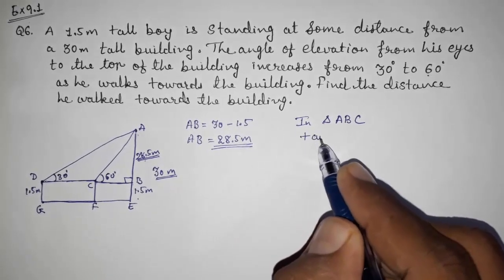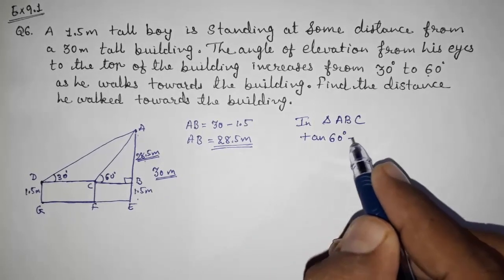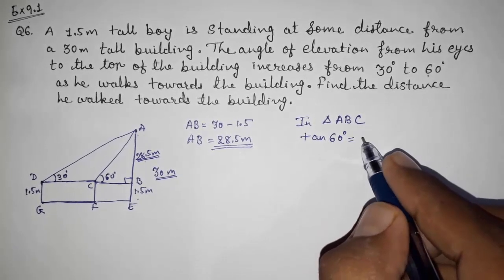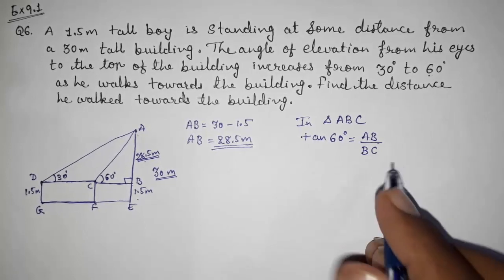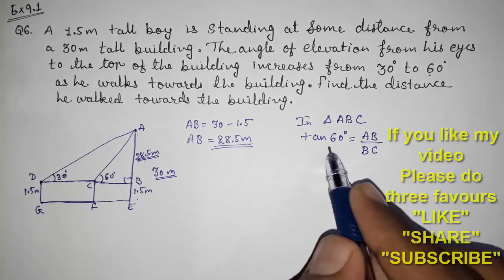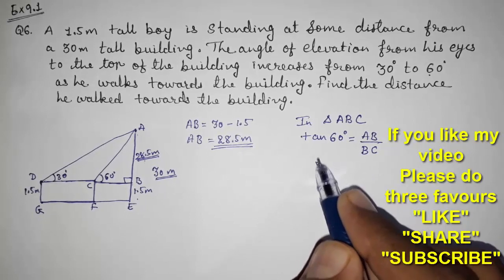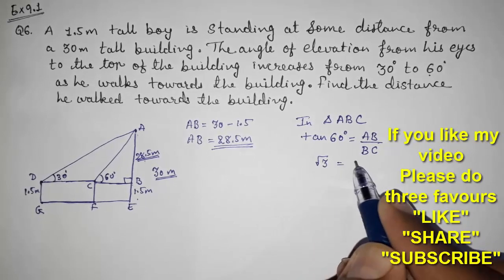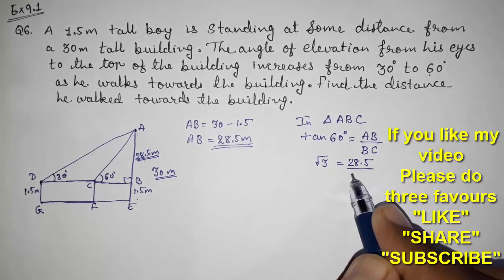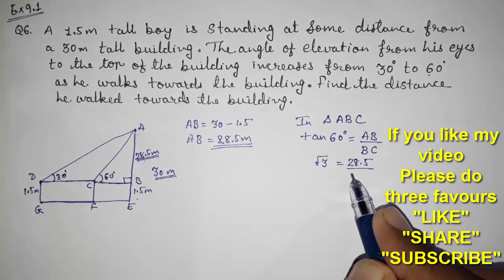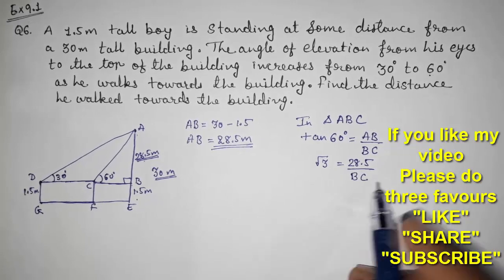So tan 60, we are going to use tan 60. That is AB upon BC. So let us put the value of tan 60, that is root 3. AB that is 28.5, BC that we don't have, so we have to directly find out.